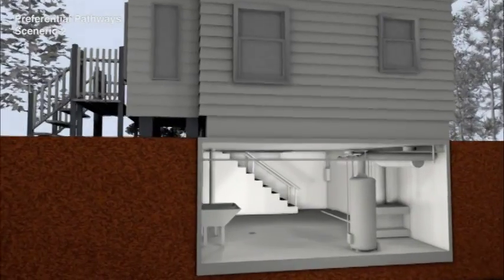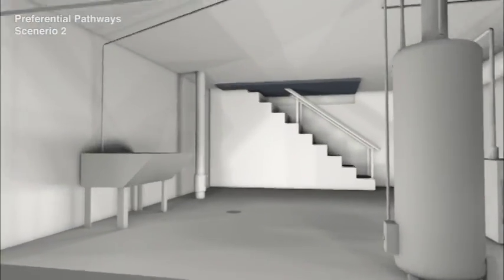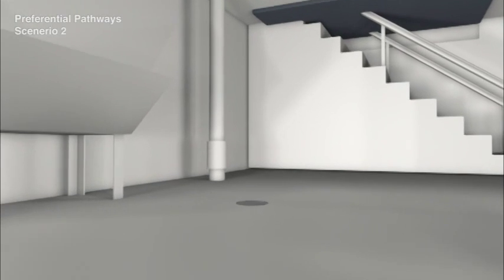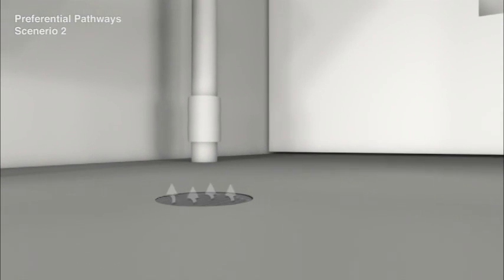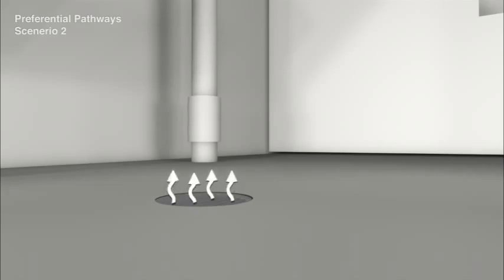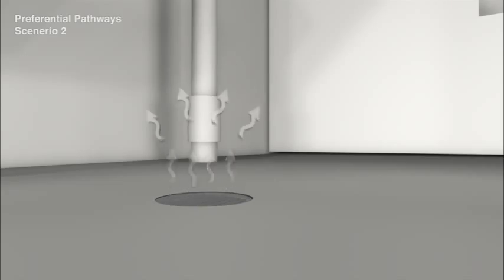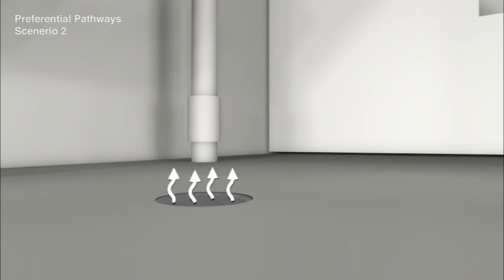The second scenario is when contaminated vapors enter a building through a preferential pathway. This can happen where utilities enter the building, for example, and contaminant vapors can enter the interior of the building.